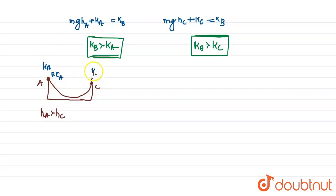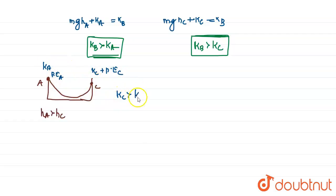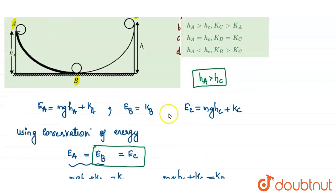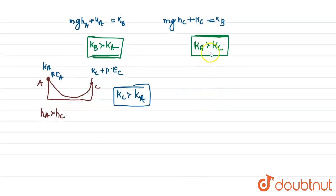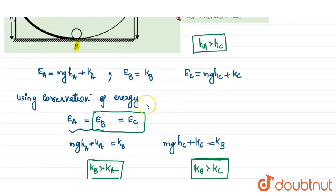Since height of A is greater than height of C, by conservation of mechanical energy, kinetic energy at C must be greater than kinetic energy at A. So the three conditions are: height of A is greater than height of C; KB is greater than both KC and KA; and KC is greater than KA.